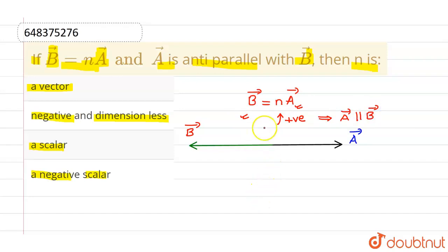But if this particular n is a negative number, then A vector will be anti-parallel to B. In this case, A vector will be anti-parallel to B vector.